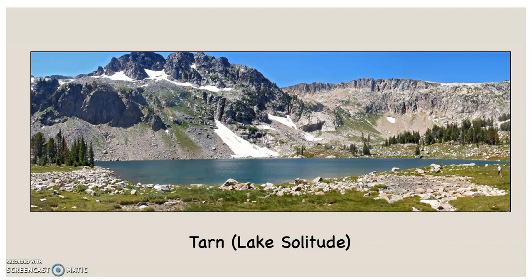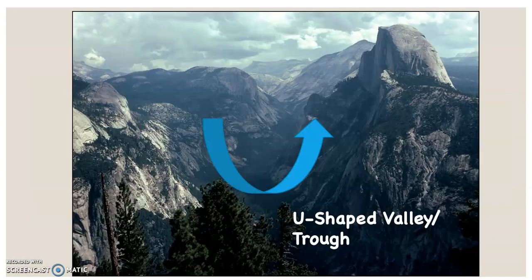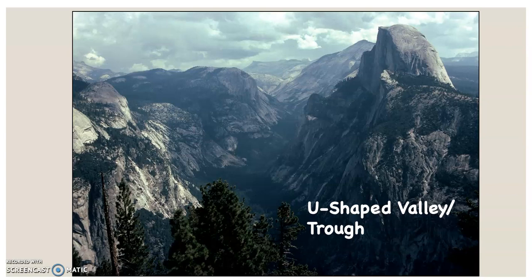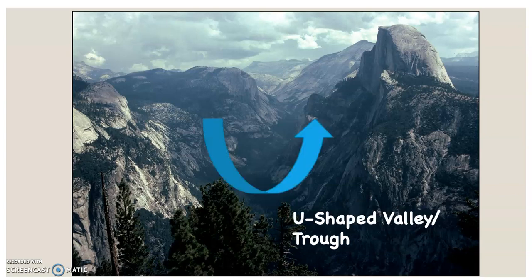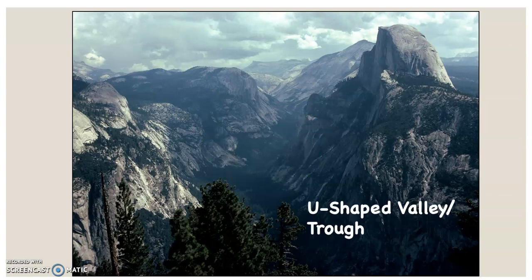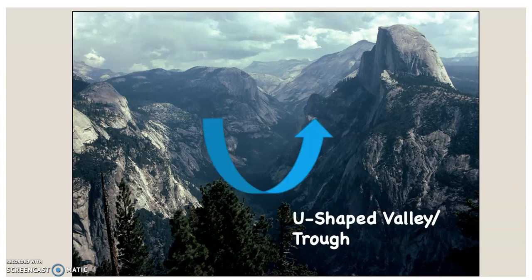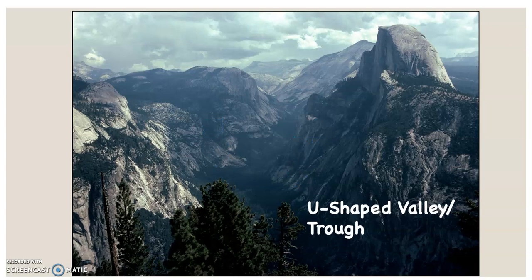Remember we met the Teton Range when talking about normal faults in the tectonics lab. This is Yosemite Valley, the classic U-shaped valley or U-shaped trough. You can see that U shape because it had 3,000 feet of glacial ice going through it at one point.